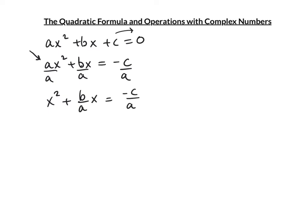Now comes the part where we create a perfect square. We take the coefficient of x, take half of it — one half of b/a is b/(2a) — then square it. That's b²/(4a²).